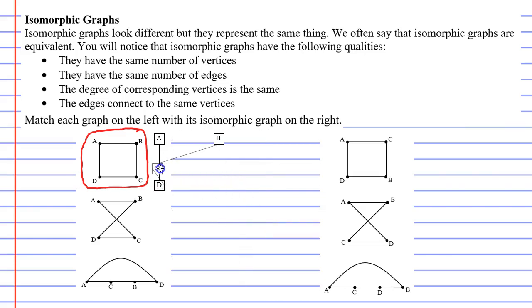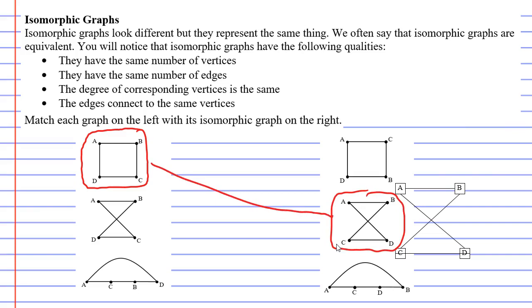So what I'm going to do is I'm actually going to bring C all the way down here. And I'm going to bring vertex D down here. So even though I've moved the vertices around, they are still the same graph. And you might notice that the graph that I've just made is exactly the same as the graph on the right side in the middle. So we have found our two isomorphic graphs and we're going to connect them with a line.